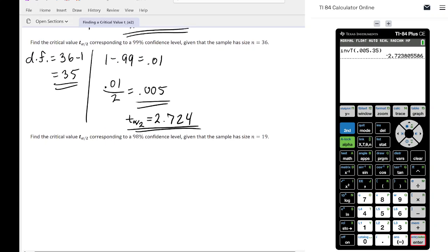Let's do one more example with a different confidence level again. We're going to find the critical value corresponding to a 98% confidence level given the sample size is n equals 19. Again, the degrees of freedom, very simple, 1 less than n, so 19 minus 1, which will give us 18 for the degrees of freedom. And then we're just going to do 1 minus 0.98 to give us 0.02, and then 0.02 divided by 2 equals 0.01.